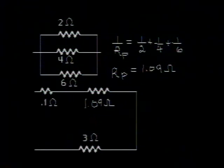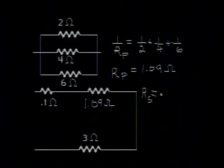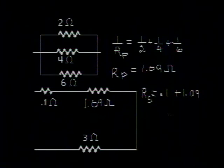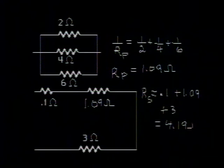The series resistance is simply the sum of the individual resistors. 0.1 plus 1.09 plus 3, all of them in ohms, gives me 4.19 ohms. So we can replace the three resistors in series by 4.19 ohms.